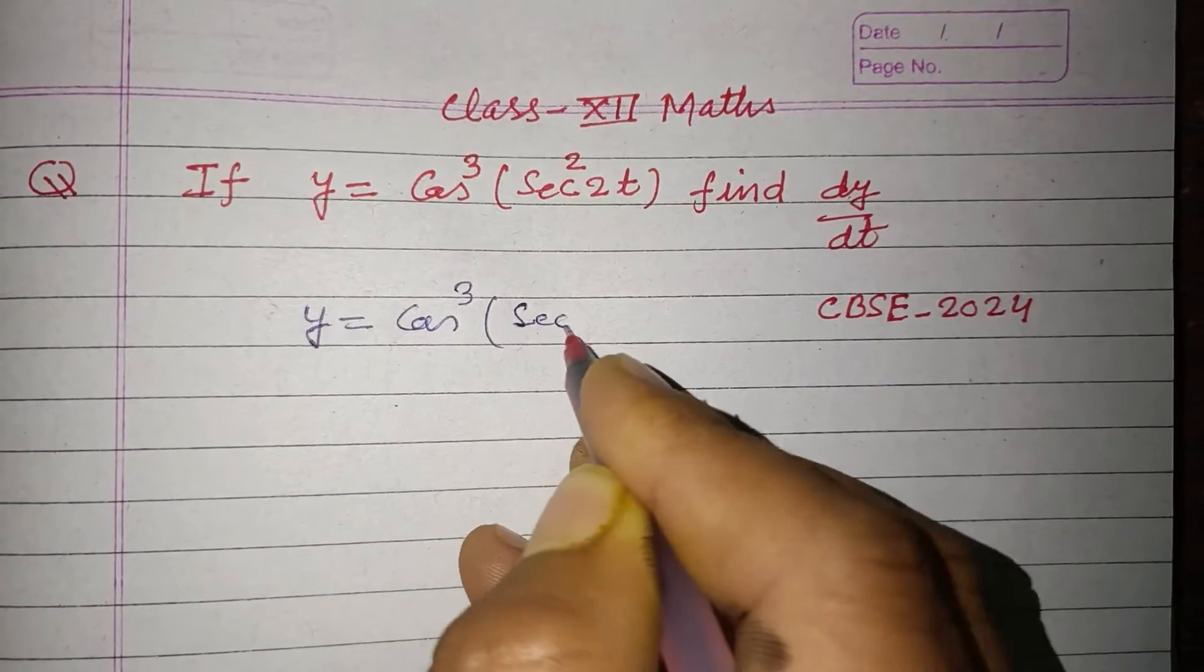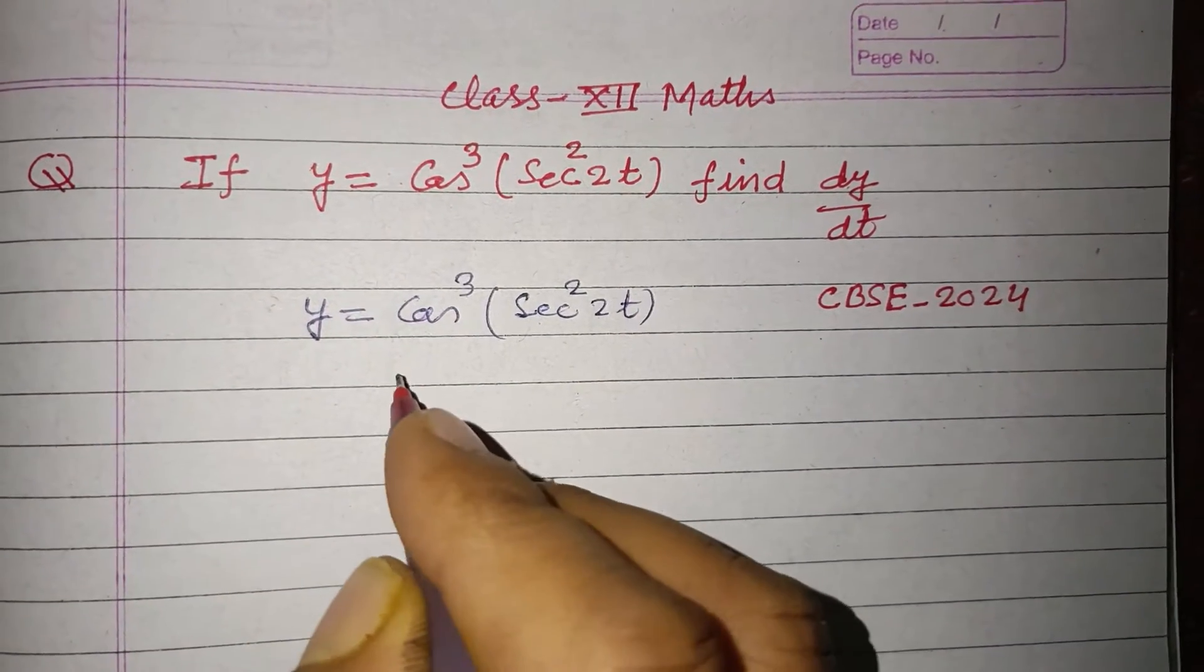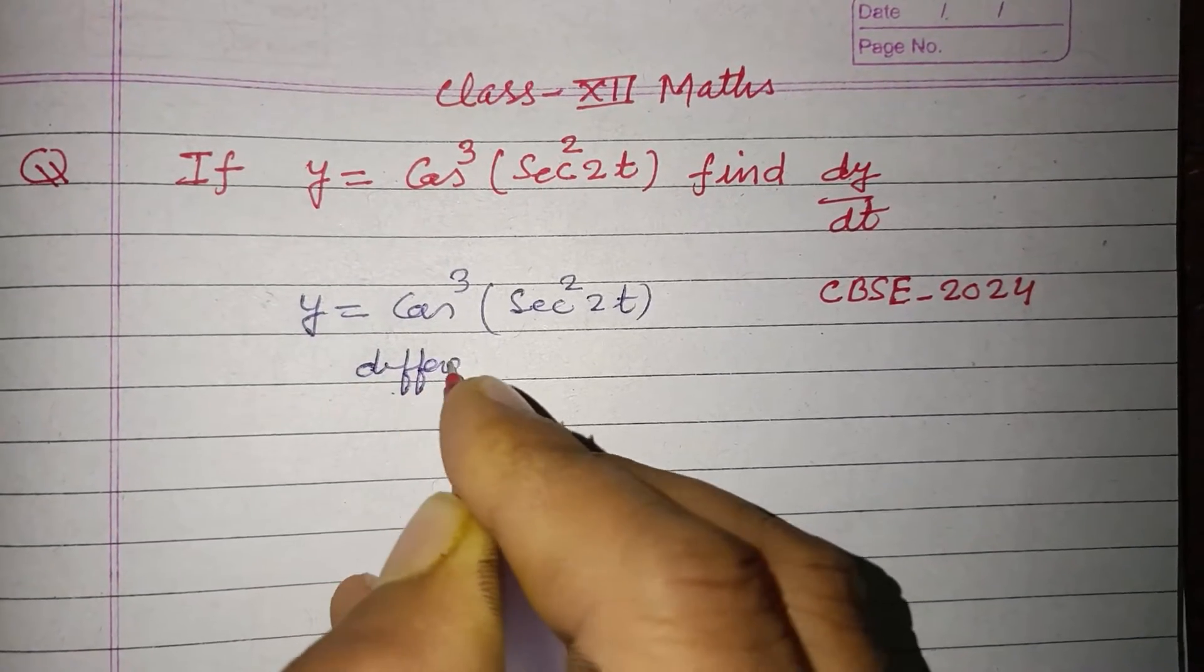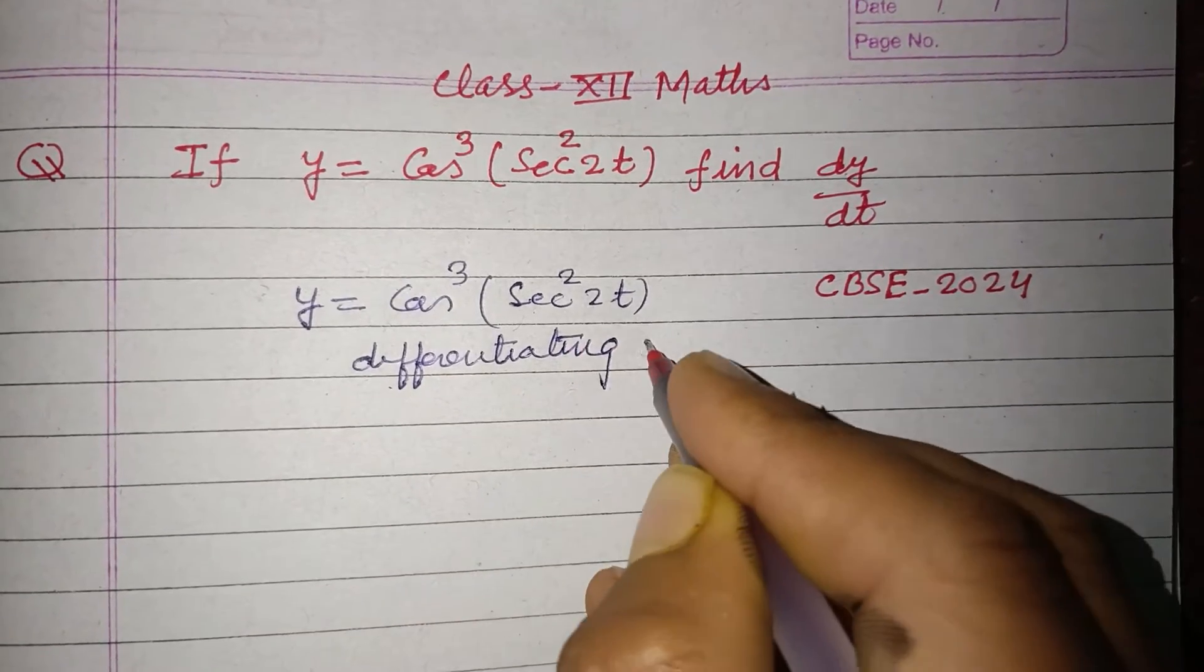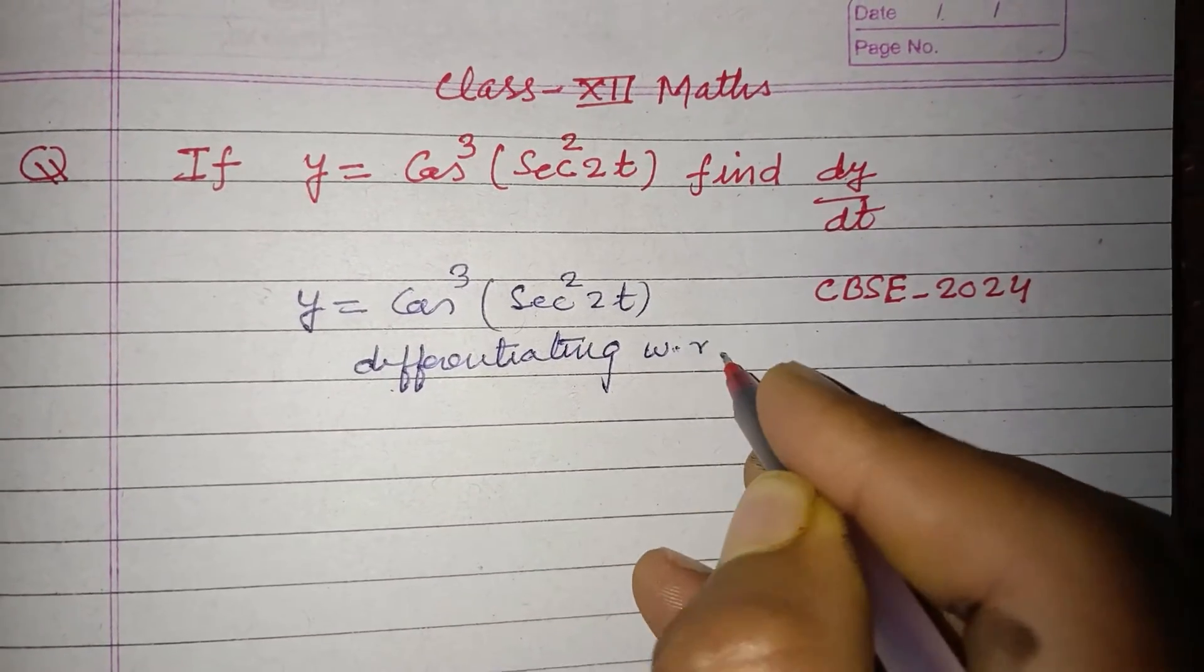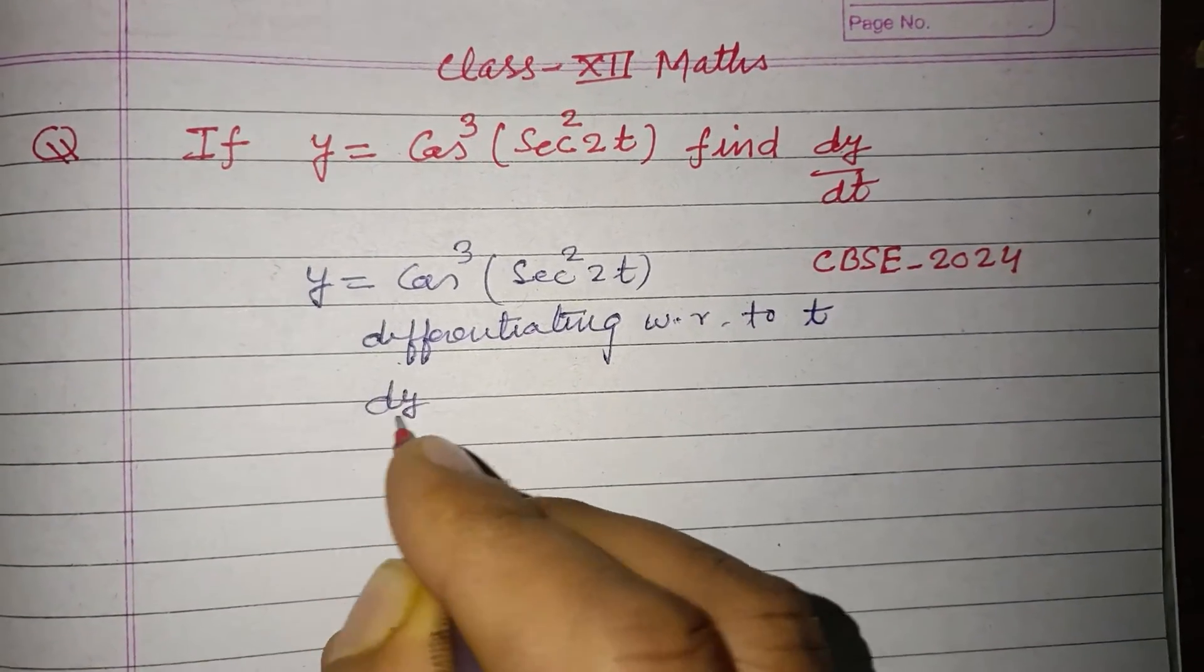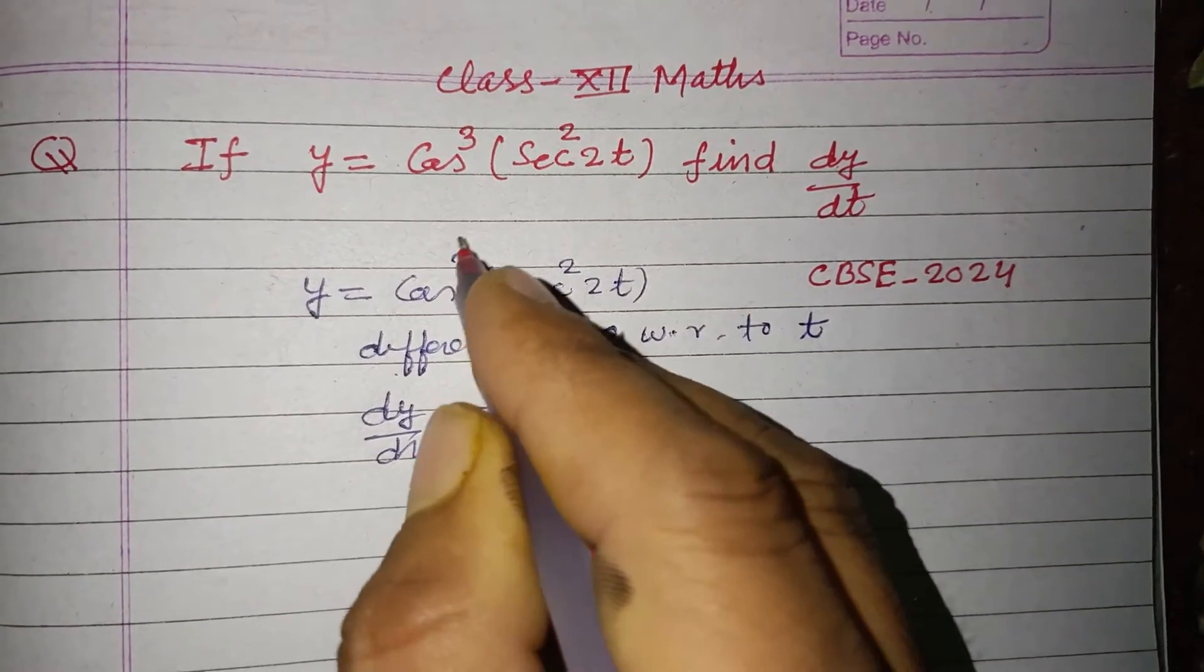Now differentiating with respect to t. So dy/dt - here this is x to the power n type.